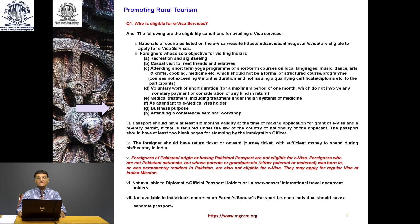Who is eligible for E-Visa services? Nationals of countries listed on the E-Visa website IndianVisaOnline.gov.in are eligible. Foreigners whose sole objective for visiting India is recreation and sightseeing; casual visit to meet friends and relatives; attending a short-term yoga program or short-term courses on local language, music, dance, arts, crafts, cooking, medicine — which should not be a formal or structured course or program.